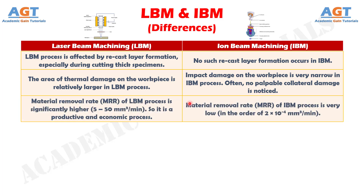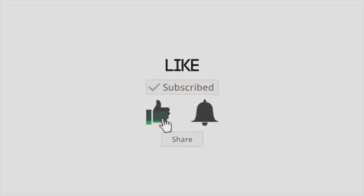And difference number 12. Material removal rate of laser beam machining process is significantly higher, which is 5 to 50 cubic millimeter per minute. So it is a productive and economic process, whereas material removal rate of ion beam machining process is very low, in the order of 2 × 10⁻⁴ cubic millimeter per minute.